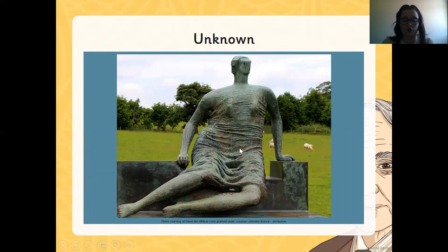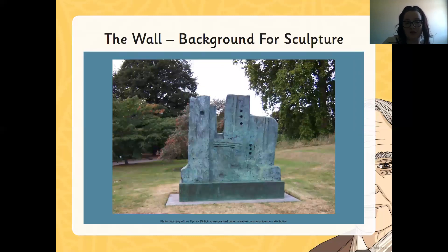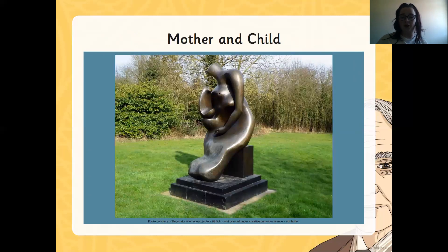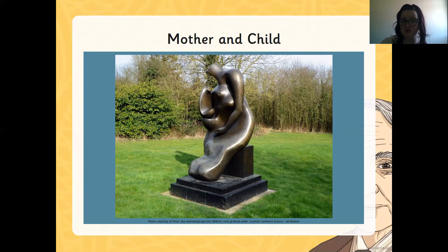This one is called Cold Unknown and it's a person laying down on their side. You can't tell whether it's a man or a woman — it looks like they're wearing a long dress or a tunic, but you can tell the sculpture resembles a person. It's gone a greeny colour, though it could have turned that colour with the weather. This one is called The Wall — it's a background for a sculpture that would sit in front of it. It's a mother and a child, very abstract. You can see what looks like an arm coming down, and maybe this is the child. It could be made out of stone or iron.